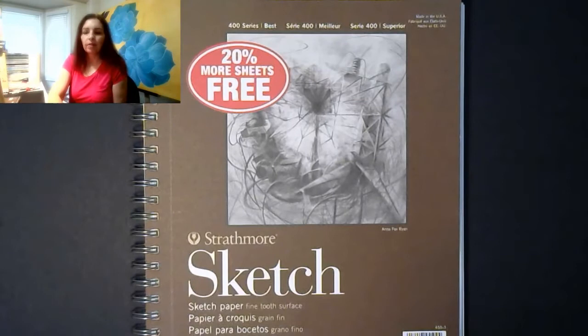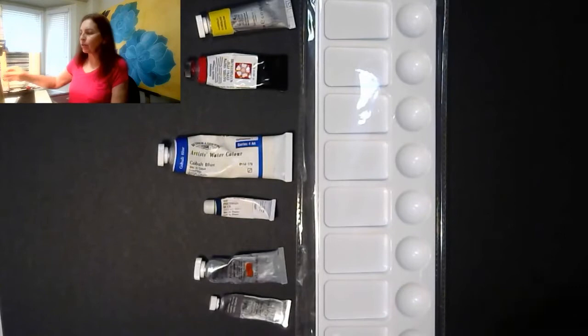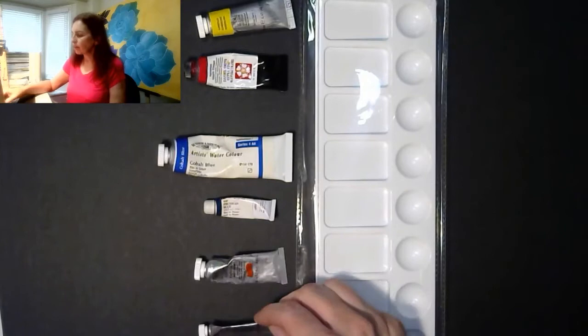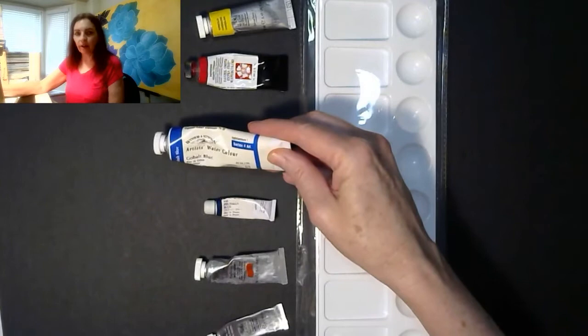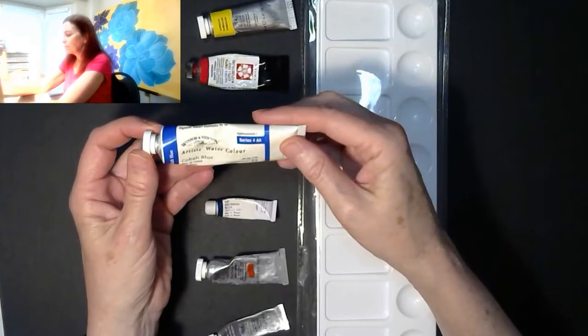Now on to the paint. For my paints, I like to use Winsor & Newton paints. You can get them in various sizes from this small size to this huge size here. What you're looking for in a paint is for it to say artists color watercolor. Make sure it says watercolor and make sure it says artist quality. Student quality just doesn't perform as well.